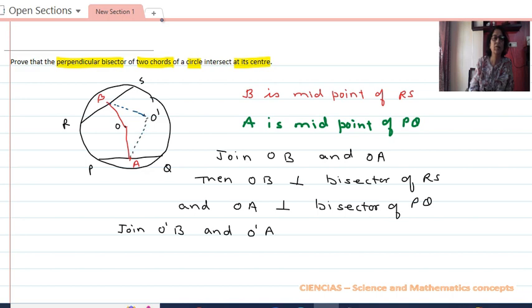O dash B is perpendicular bisector of RS and O dash A is perpendicular bisector of PQ.